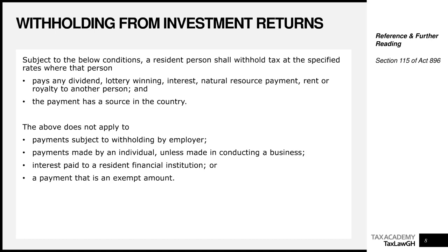For example, the income of a public university or government-sponsored education institution is exempt from income tax. If you make payments to, say, the University of Ghana, you should not withhold on them because the university is not subject to income tax on its core income. They have no income tax to pay, so there is no advance payment for you to withhold on.